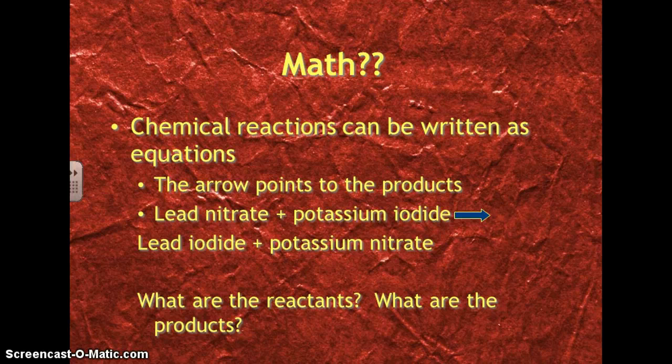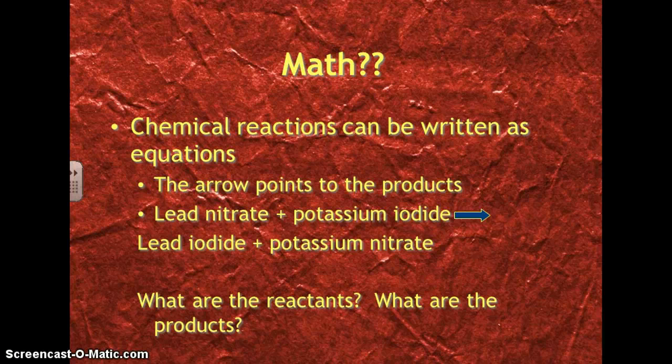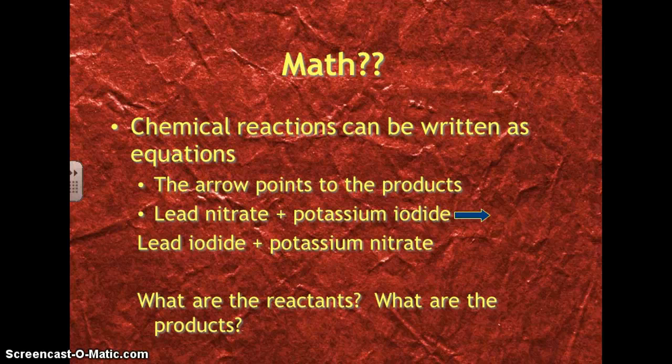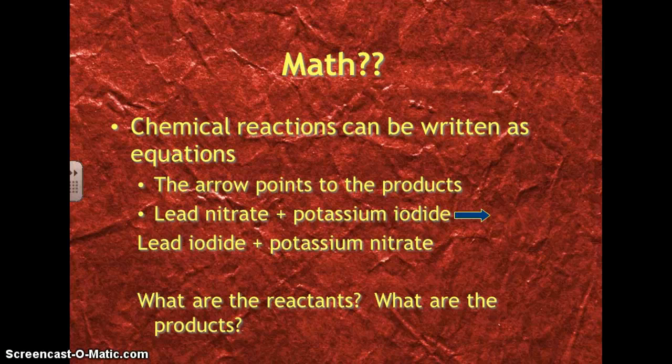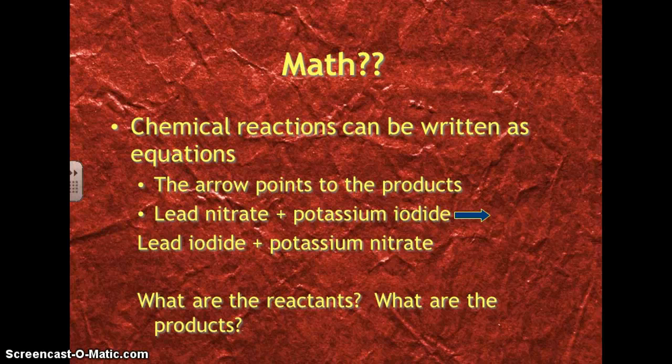We are going to be doing some math when we're working with chemistry. We're going to be balancing chemical equations, and you did that a little bit last year, too. Chemical reactions are going to be written as equations. The arrow is going to point to the product, so if you see the blue arrow there. So, for example, if we take lead nitrate and add it to potassium iodide, it's going to produce lead iodide and potassium nitrate.